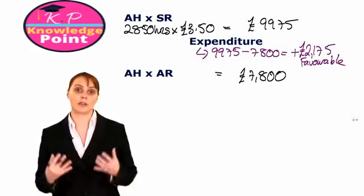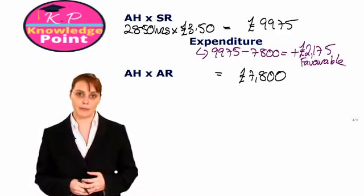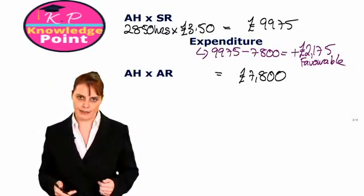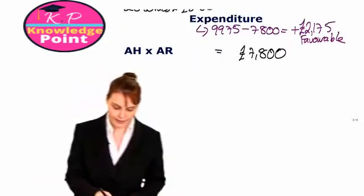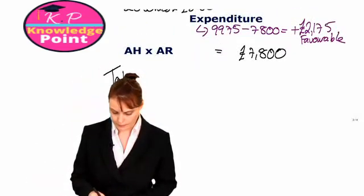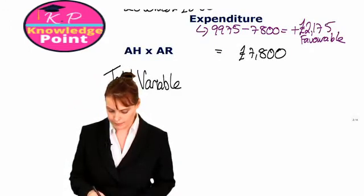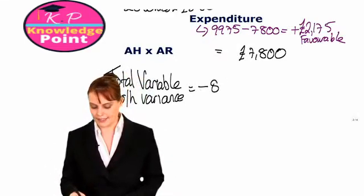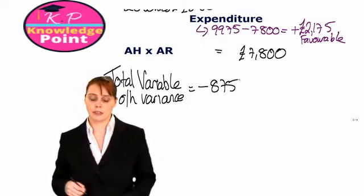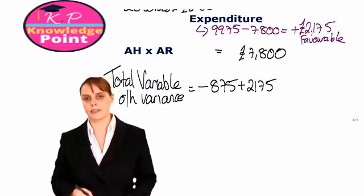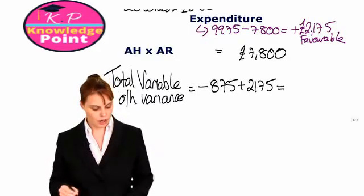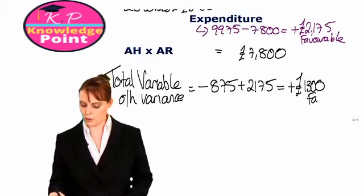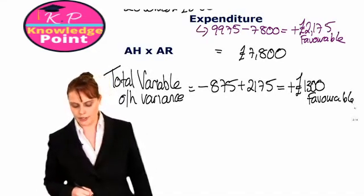Our final step, as always, is to calculate our total variance in relation to our variable overheads. We just need to sum our efficiency variance and our expenditure variance. Our total variable overhead variance will be minus £875 for the adverse efficiency variance, plus £2,175 for the favorable expenditure variance, giving us a positive figure of £1,300. So our overall variance was £1,300 favorable.